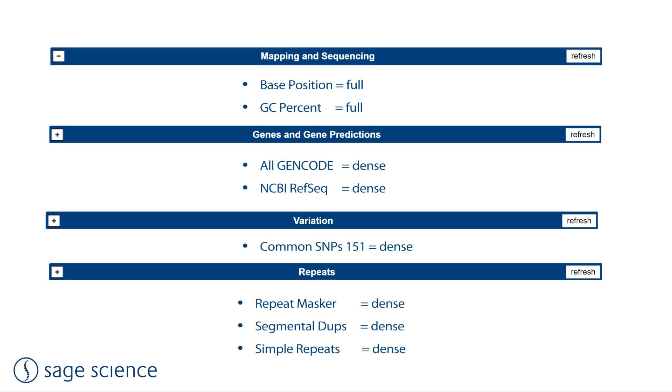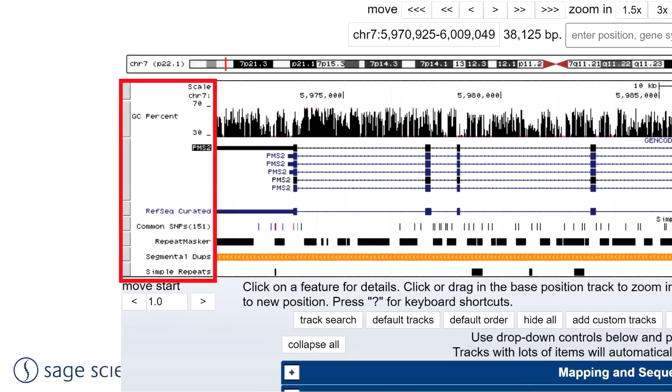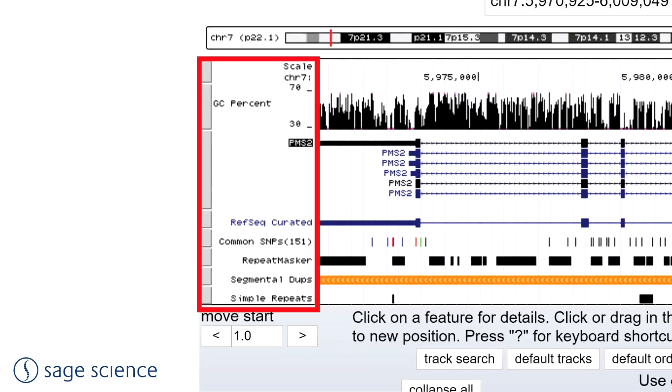For those following the tutorial live, here are the settings again. The final browser display should look like this. We will look for sequence regions that are devoid of repeats and SNPs, and importantly, have balanced GC representation.